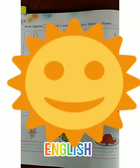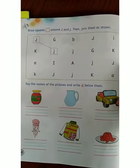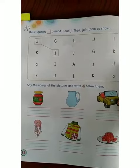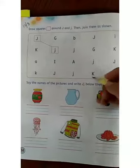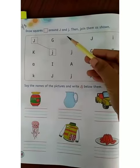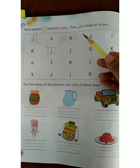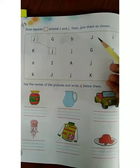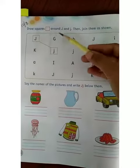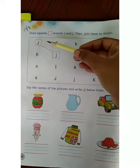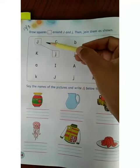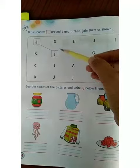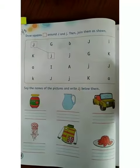Good morning children. Welcome to your English class. Today we will do revision of J. We will do page number 34 of your English book. What you have to do? Draw squares around capital J and small J and then join them as shown. Here is capital J and here is small J. You have to draw a square around J and then join them like this.